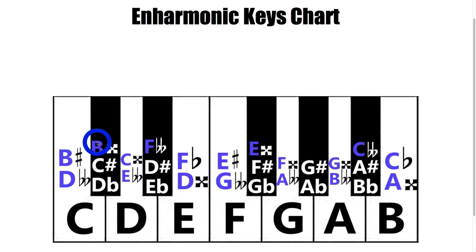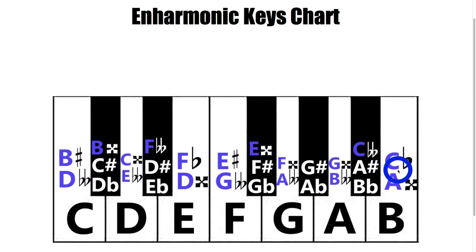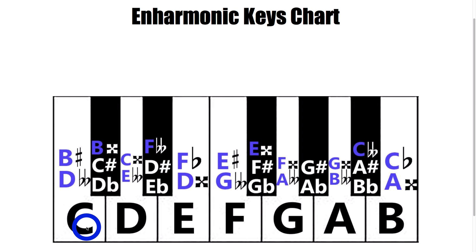We also have this one at the top, which is called a B double sharp — that little cross-looking symbol represents a double sharp, meaning we are two sharps up from a B. So the enharmonic equivalents here would be D-flat, C-sharp, and B double sharp. The same thing applies to C down here: it's originally known as a C natural, but we can also call it a B double flat — those two flat symbols mean B double flat — as well as a B sharp.